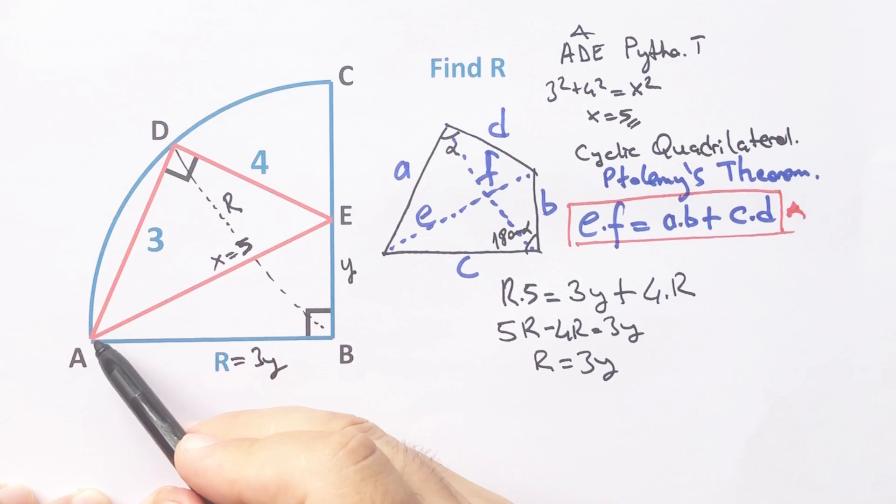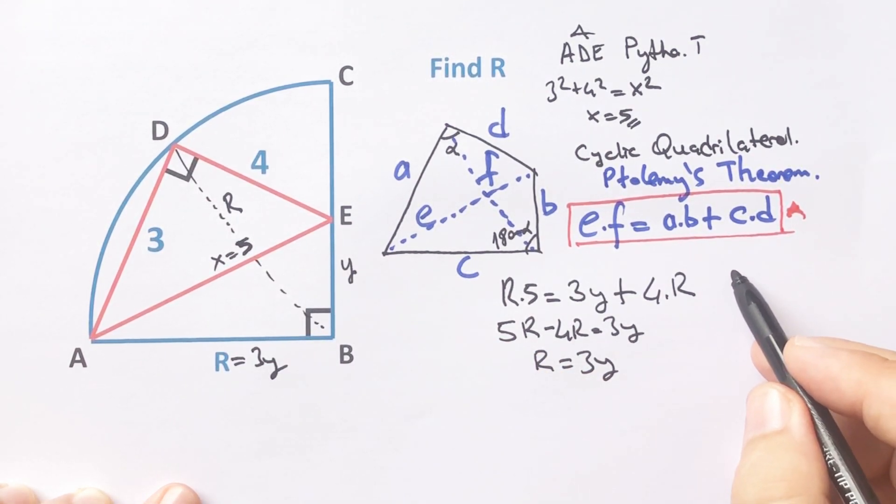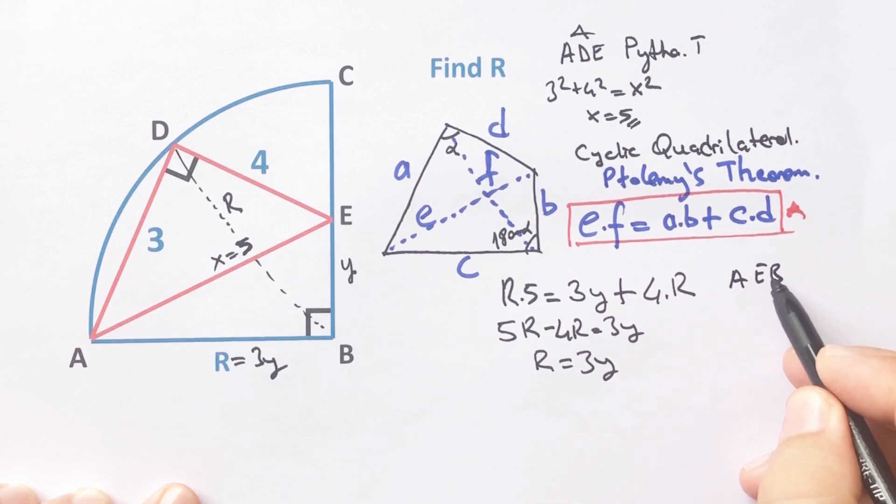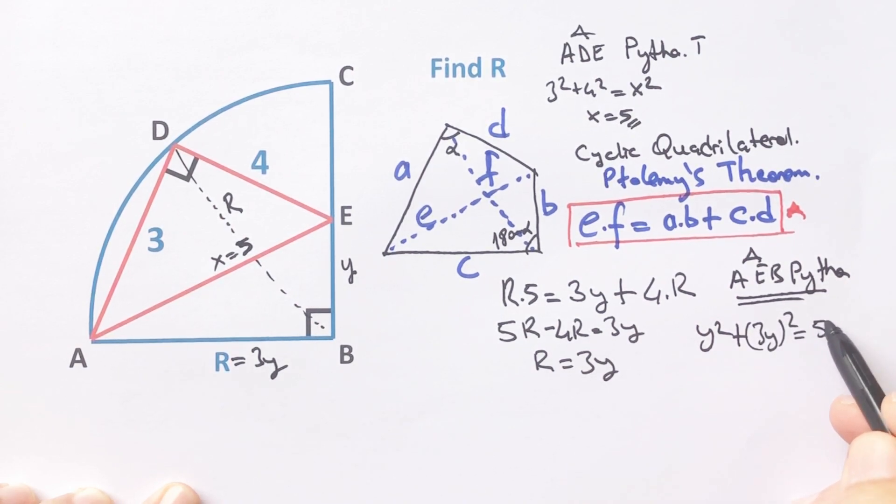And then for this triangle, if we apply Pythagorean theorem one more time, y squared plus 3y whole squared equals 5 squared. So y squared plus 9y squared equals 25.